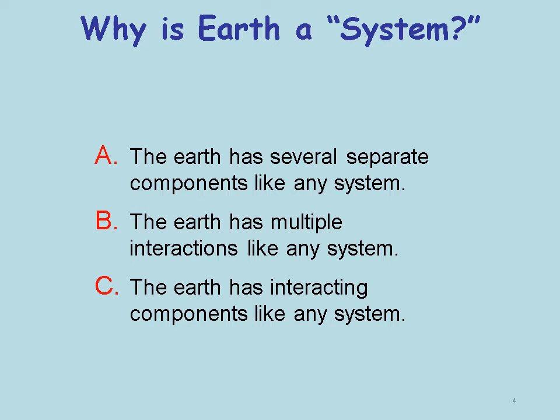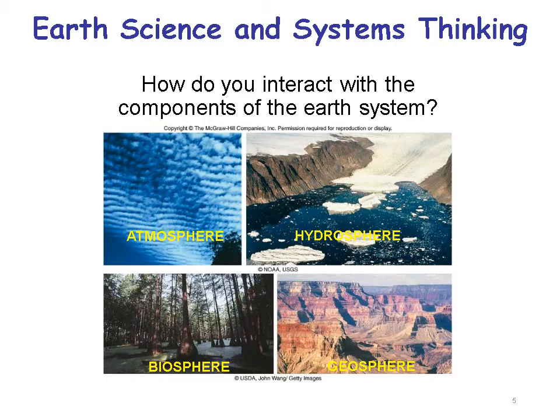So, why is Earth a system? We've got three choices here, and one of these is the best choice. Choice A: the Earth has several separate components like any system. Choice B: the Earth has multiple interactions like any system. Or Choice C: the Earth has interacting components like any system. The best answer is C because of two things — the word 'interacting' and the word 'components.' A has the idea of components, B has the idea of interactions, but C brings both in.